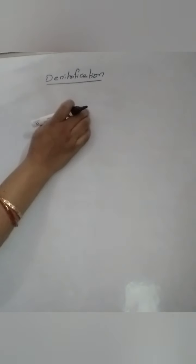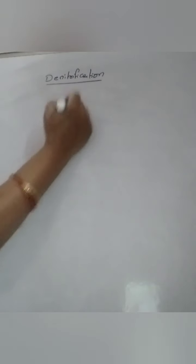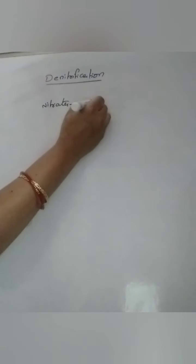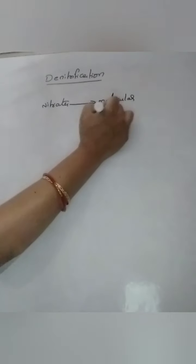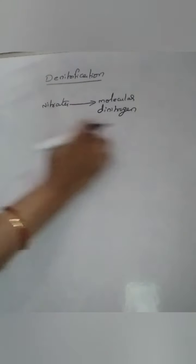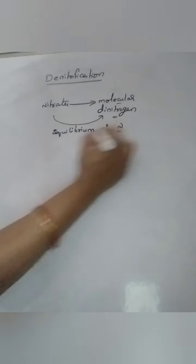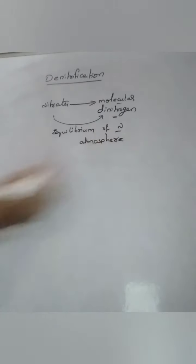Denitrification is the final step of the nitrogen cycle. The nitrates formed in the nitrification step are present in the soil, and they are converted back into molecular dinitrogen form, releasing into the atmosphere. So from where we started — molecular nitrogen broken down to form nitrate — this nitrate is converted back into molecular dinitrogen form to maintain the equilibrium of nitrogen in the atmosphere.